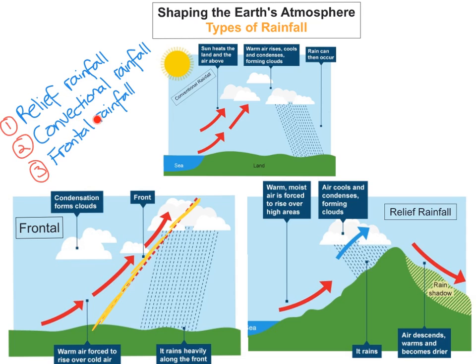So that's it for the three types of rainfall. You've got relief, convection, and frontal. Just one thing to note: ascending and descending air create different weather patterns. If you would like to look at those different weather patterns, please look at my other videos on anticyclones and depressions. Just quickly — ascending air is when low pressure rises up and that creates a depression, and descending air is when high pressure falls down and creates an area of high pressure, which is an anticyclone.